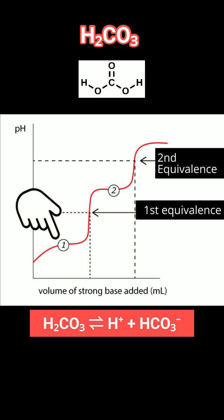Eventually, you hit the first equivalence point. All the carbonic acid is converted to bicarbonate, HCO3-, then keep adding base.